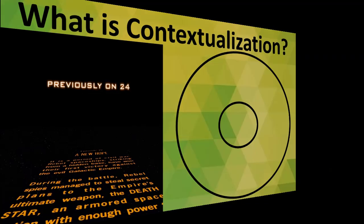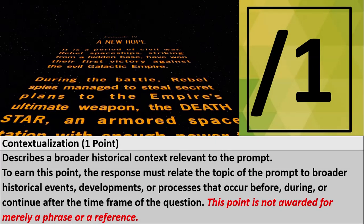So let's see if we can get a decent definition of it. In a long essay question, even in your DBQs — your document-based question — it's about the first three to four sentences in your essay. It's the first thing you need to start off with. It describes a broader historical context relevant to the prompt, basically background information. To earn this point, the response must relate the topic of the prompt to broader historical events, developments, or processes that occur before, during, or continue after the timeframe of the question. This point is not awarded for merely a phrase or a reference, so you need to be specific.